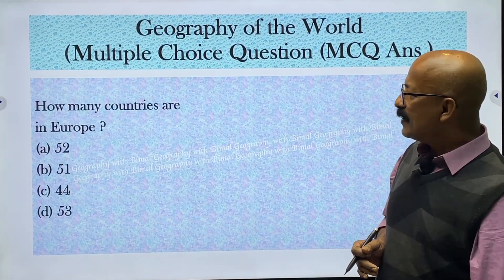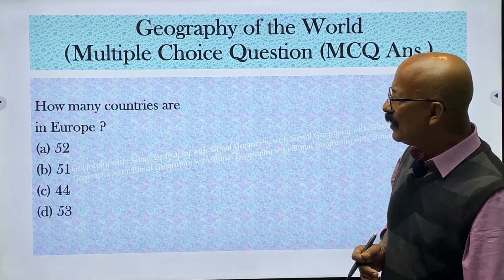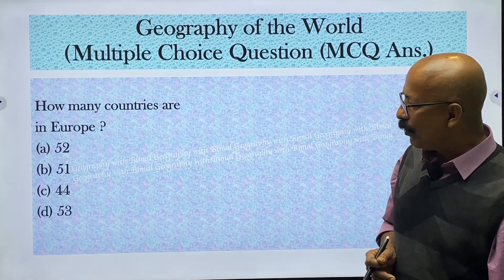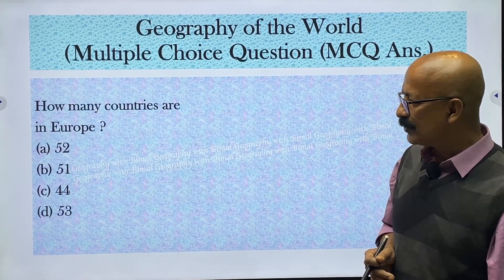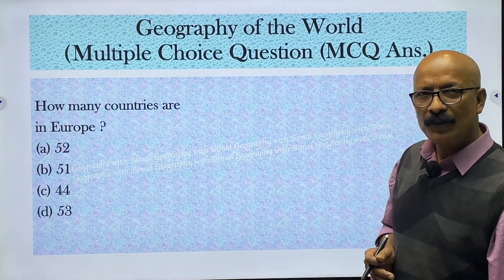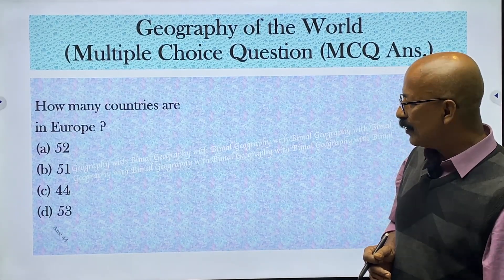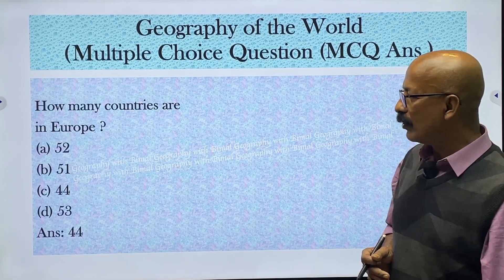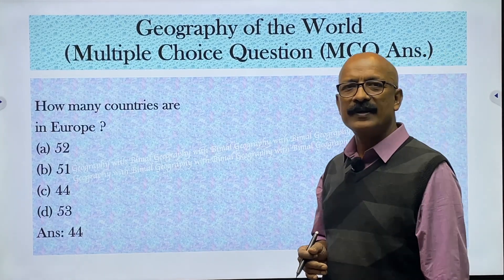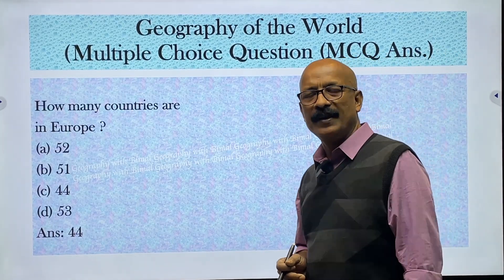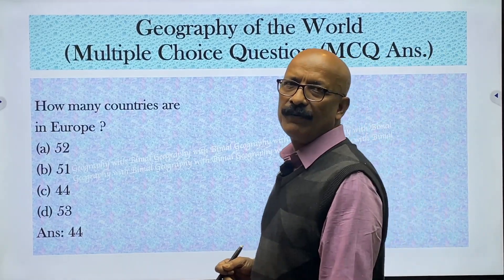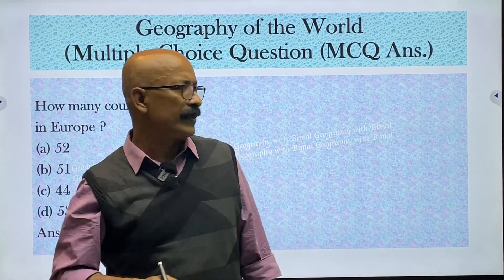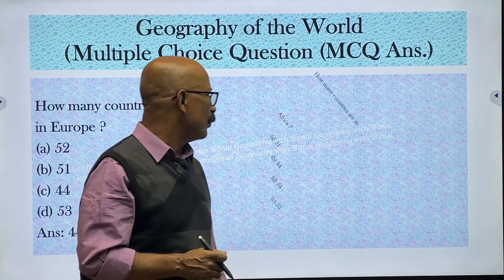How many countries are there in Europe? There are 44 countries in Europe.